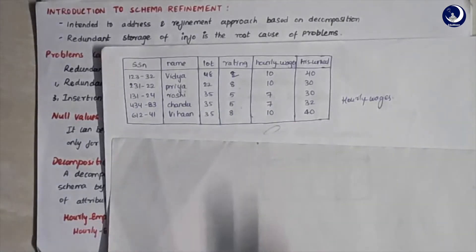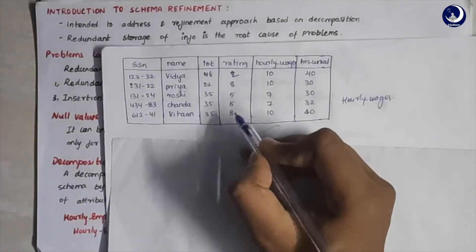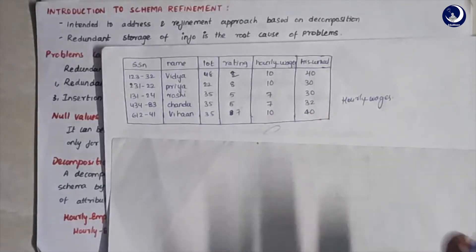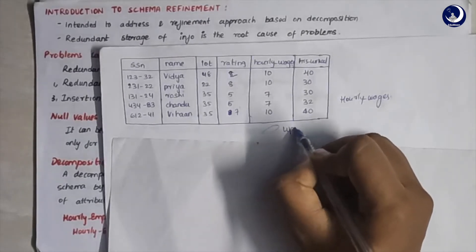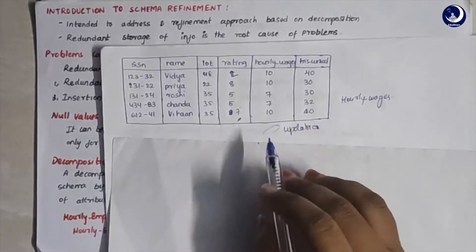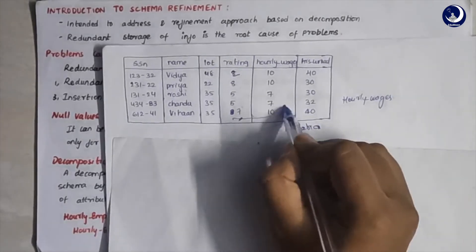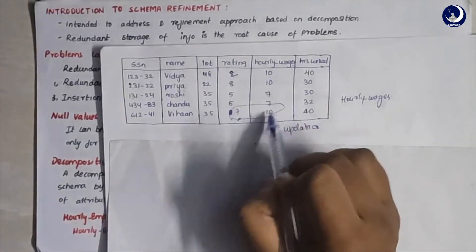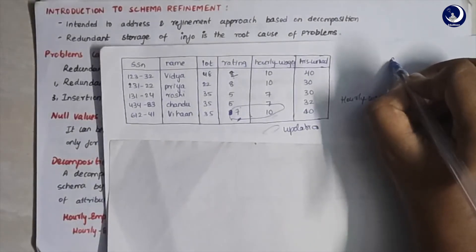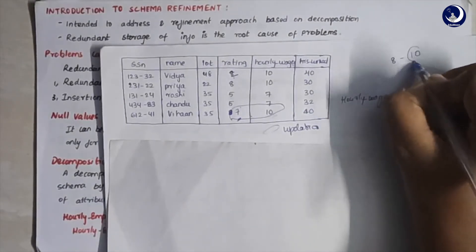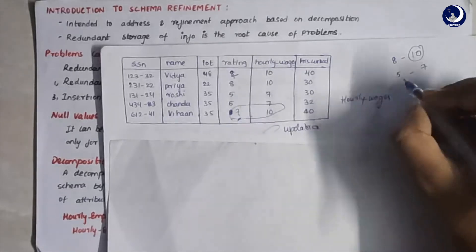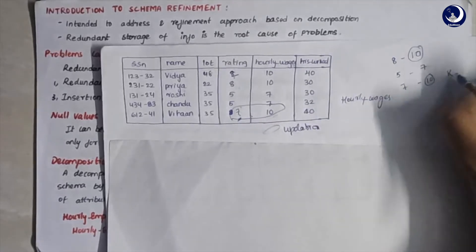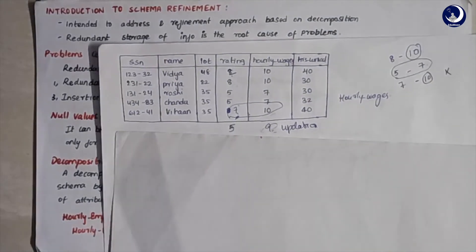For example, if I change a person's rating value to 7 but do not reflect that change in the hourly wages column, the data becomes inconsistent. We established that a person with rating 8 gets wages of 10 and a person with rating 5 gets 7, but after updating the rating to 7, that person is still getting 10 — which violates the rule. This is the updation anomaly problem caused by redundant data.